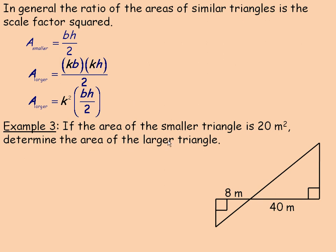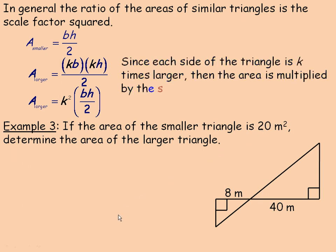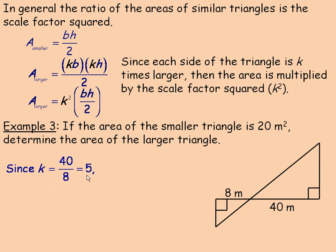In Example 3, we use that idea to find the area of the larger triangle. This is the same diagram as Example 1, and we're told the area of the smaller triangle is 20 square meters. The scale factor is 5, so all we do is multiply 20 by 5 squared. Since k equals 5, the area of the larger triangle equals k squared times 20 — that's 25 times 20, which is 500. So the area of this triangle is 500 square meters.